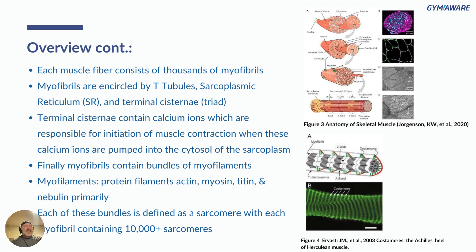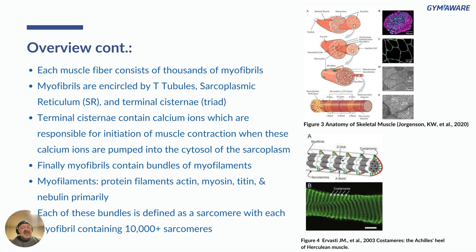Each muscle fiber consists of thousands of myofibrils. Myofibrils are encircled by T-tubules, sarcoplasmic reticulum, and terminal cisternae — together called the triad. That's where calcium ions find their way into the muscle, which really causes movement. The terminal cisternae contain calcium ions responsible for initiating muscle contraction; when pumped into the sarcoplasm, contraction begins. Finally, myofibrils contain bundles of myofilaments — protein filaments: primarily actin, myosin, titin, and nebulin — with each myofibril containing 10,000+ sarcomeres.